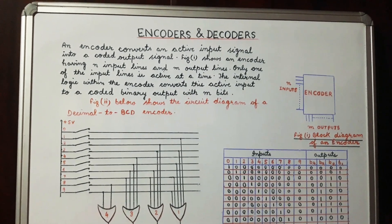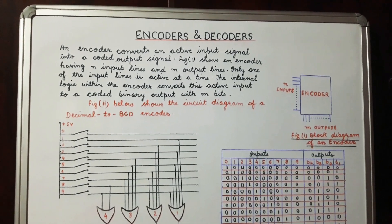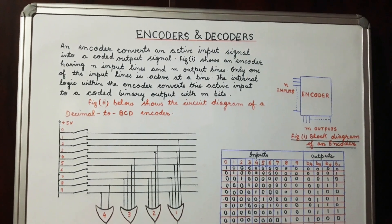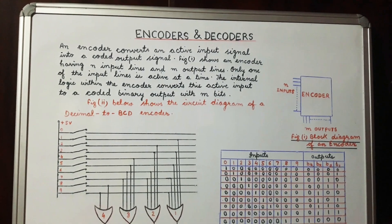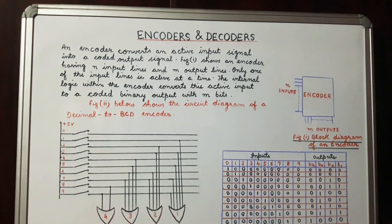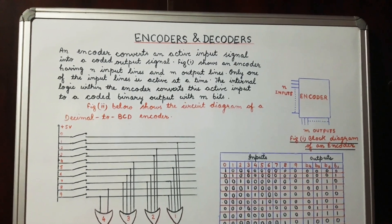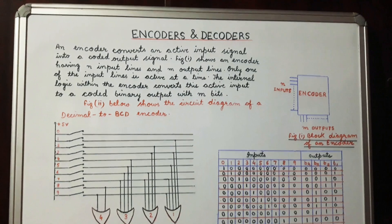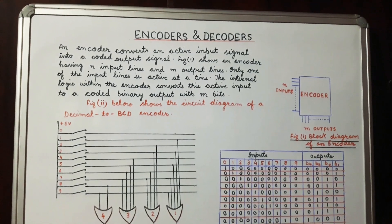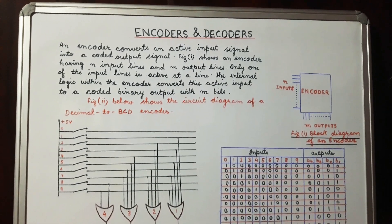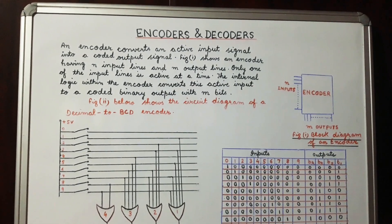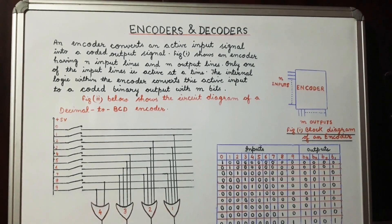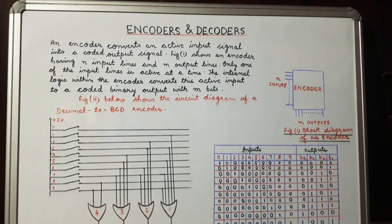Only one of the input lines is active at a time, and the internal logic within the encoder converts this active input to a coded binary output with m number of bits.